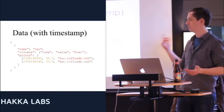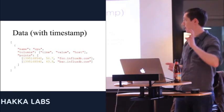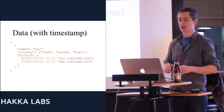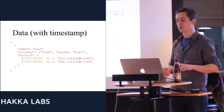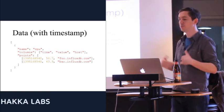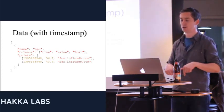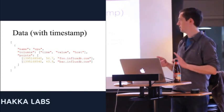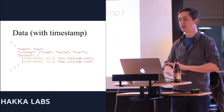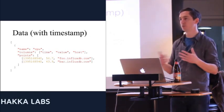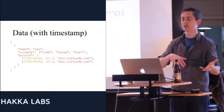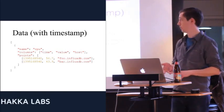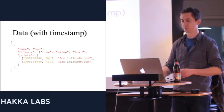Here's what the data looks like. You have a collection of objects. Here we have a single series called CPU with three columns: time, value, and host. Then we have two points organized in time descending. Time is a special built-in column that's always there — even if you don't specify a time, one will be written for you because that's how it's indexed. You can have double values, integers, strings, or booleans.